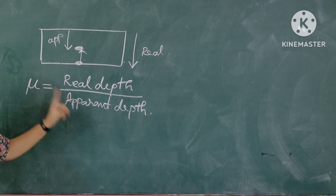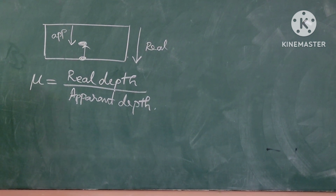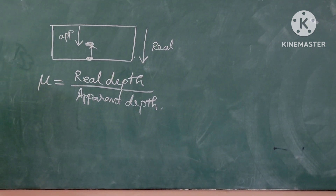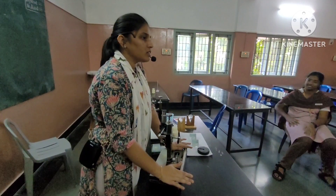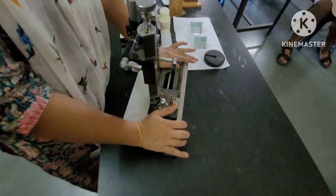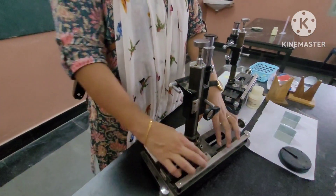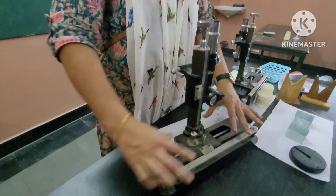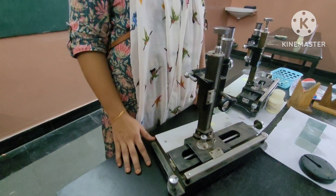Once we know the real depth and apparent depth, we can use the formula to calculate the refractive index. This device is called a traveling microscope. Why is it called a traveling microscope? Because this portion can move vertically and this entire thing can move horizontally. That is why it is called a traveling microscope.